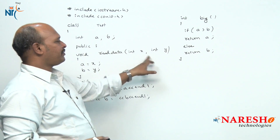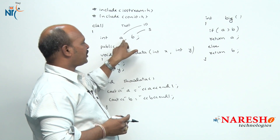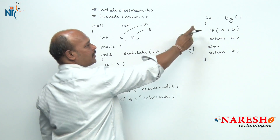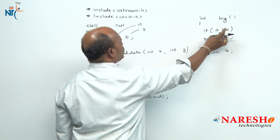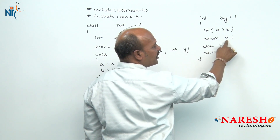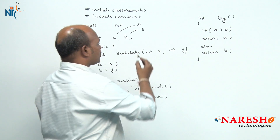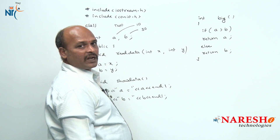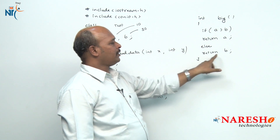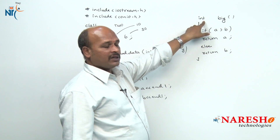For example, if a = 10 and b = 3, then 10 > 3 is true so we return a, which is 10. If instead we enter 10 and 30, then 10 > 30 is false so we go to the else and return b, which is 30. The return data type is integer because we are returning an integer value.